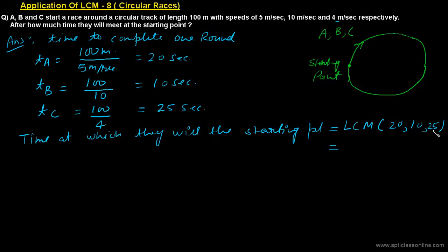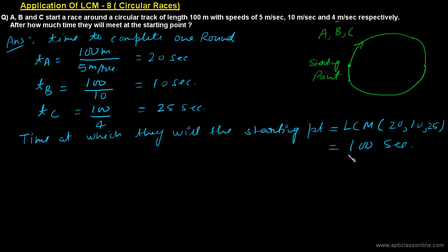To find the LCM of 20, 10, and 25, we check multiples of 25: 25 is not a multiple of 20 and 10; 50 is not; 75 is not; but 100 is a common multiple of 20, 10, and 25. So the LCM is 100 seconds, meaning after 100 seconds they will be meeting at the starting point for the very first time.